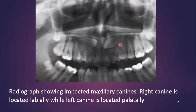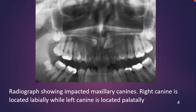In this radiograph, you can see a bilateral impacted canine. The right canine is located labially, while the left canine is located palatally. This localization of the impacted canine should be done before the surgical approach, because it determines whether you should take the labial approach, the palatal approach, or a combination of both.